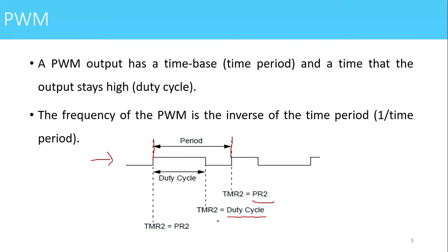While generating this PWM waveform, the Timer 2 module is required. Whenever we start PWM generation, the value in Timer 2 goes on incrementing and is continuously compared with the duty cycle register. Whenever the value in Timer 2 and the duty cycle register becomes equal, the output of the pin is made low. Then the counting in Timer 2 continues and is compared with the value in the PR2 register. Whenever Timer 2 becomes equal to PR2, the pin is made high, and this is repeated continuously — this is how the PWM waveform is generated.